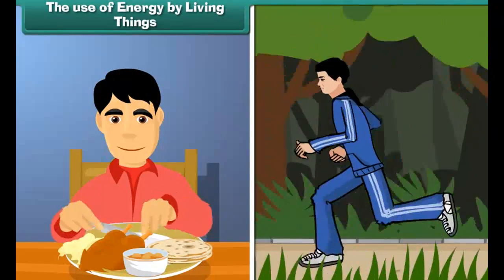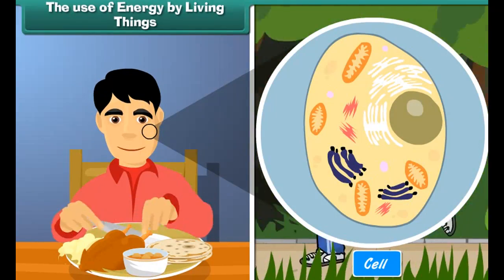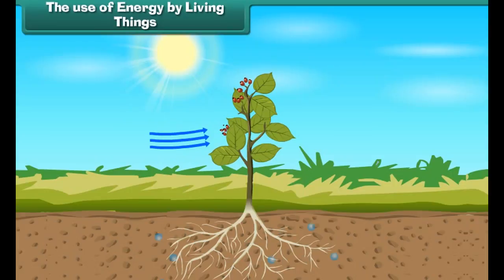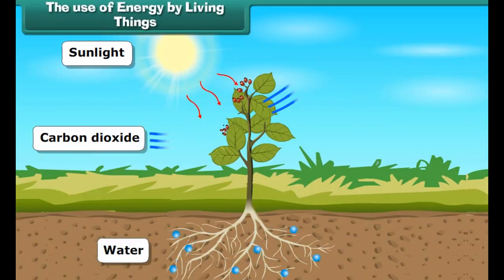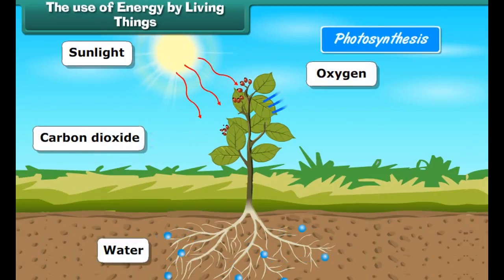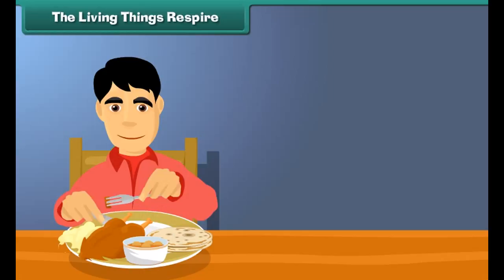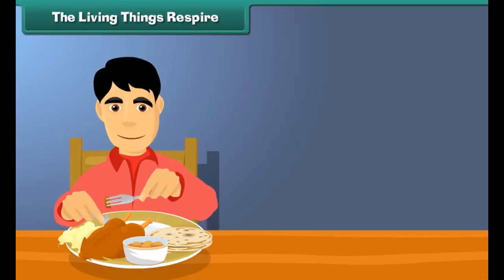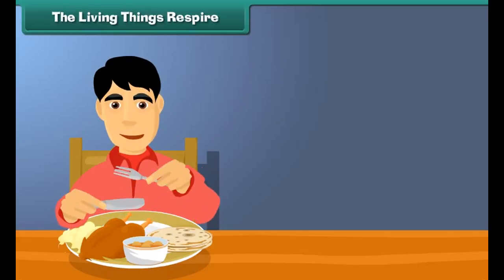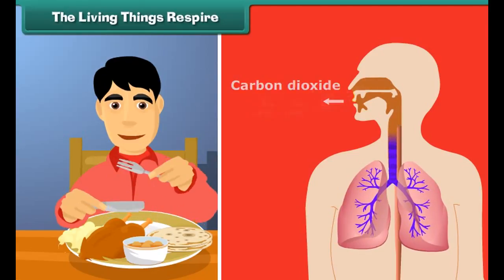Living beings constantly require energy — not only to perform various activities of the body, but also to overcome entropy, the degree of disorder in a system or tendency to randomness. The source of energy is food, which is required by every cell of the body. Food is prepared by plants through the process of photosynthesis. Plants require sunlight, carbon dioxide, water, and chlorophyll for photosynthesis.